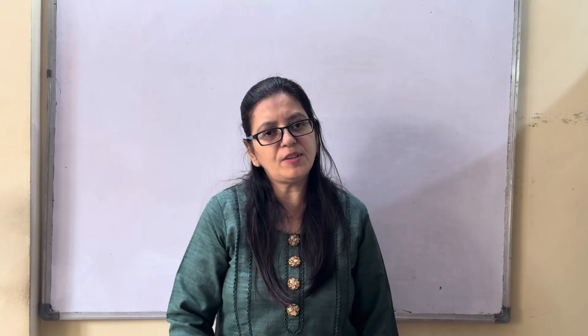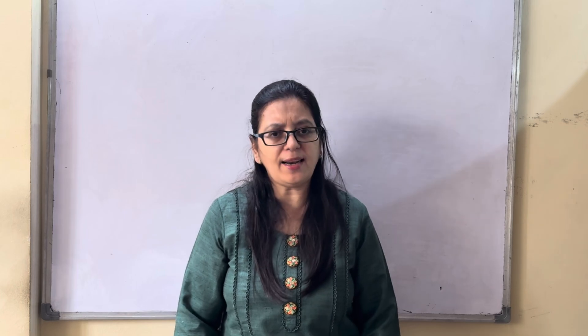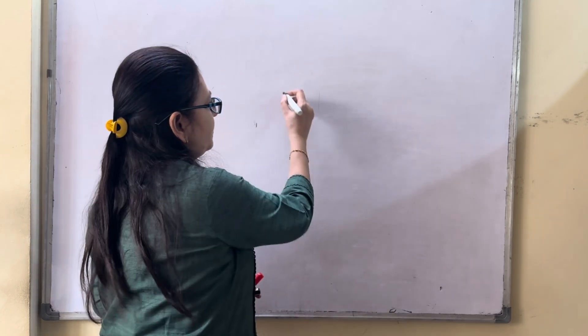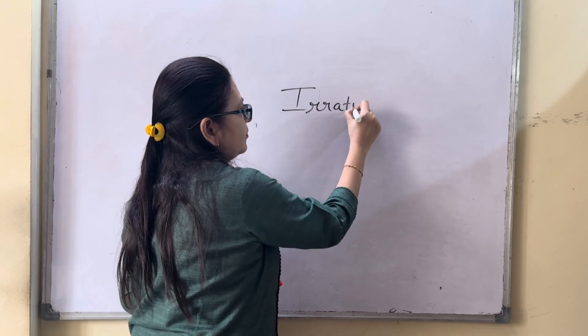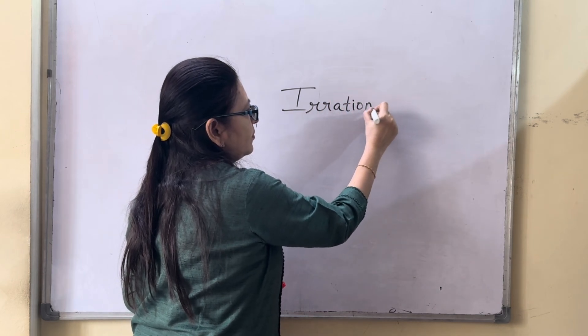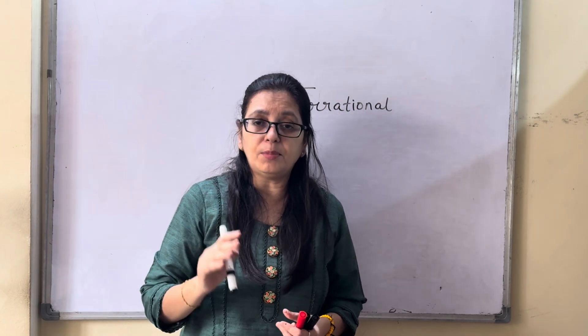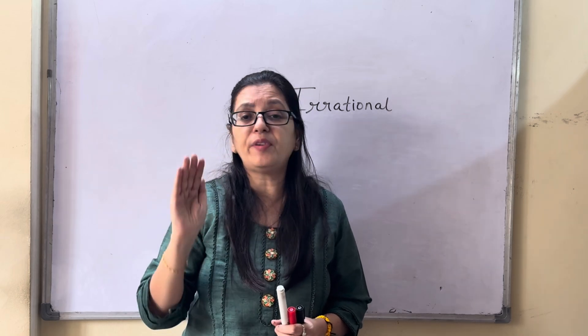Hi kids, in the previous part we have learned about rational numbers. Now we learn about irrational numbers. What do you mean by irrational numbers? Irrational numbers are the numbers which are not perfect squares.